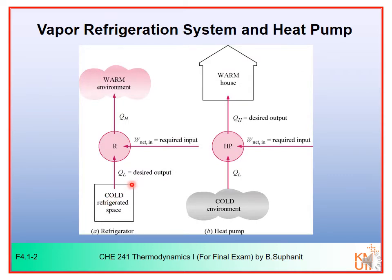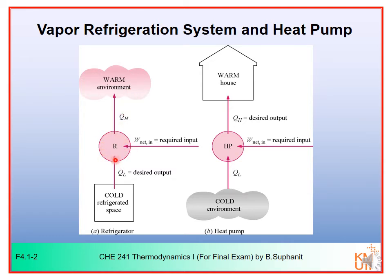Let's consider the basic diagram of the refrigeration system and the heat pump. You can see that the refrigeration system can be used to transfer heat from the cold refrigerator space to the warm environment. But this process of heat transfer cannot occur spontaneously. You need external work to transfer heat from a low temperature reservoir to a high temperature reservoir. The working fluid used in the refrigeration system is called the refrigerant, which could be either vapor or gas.